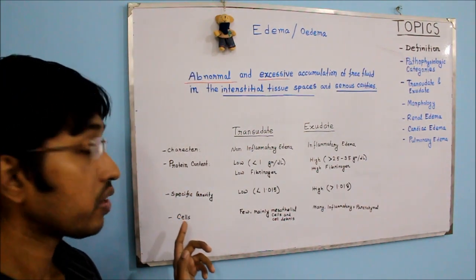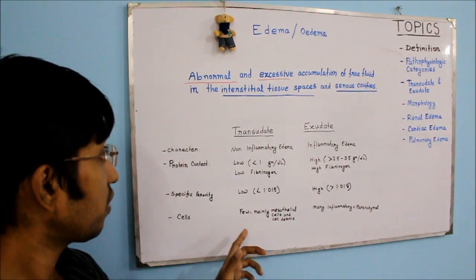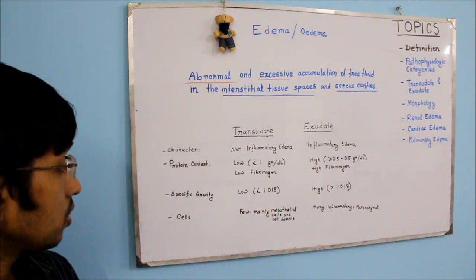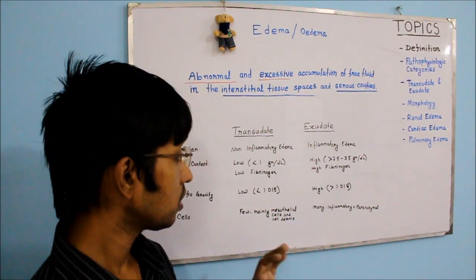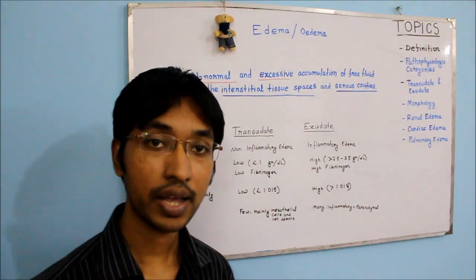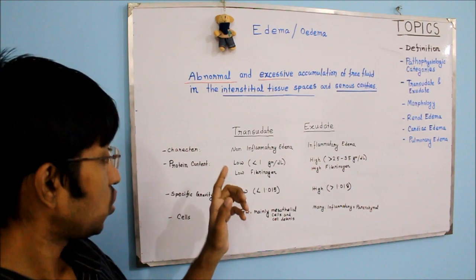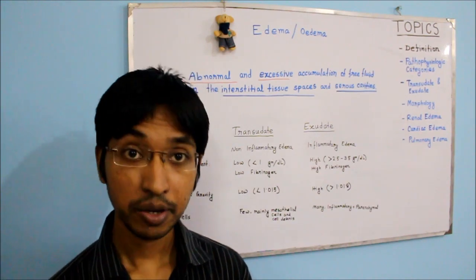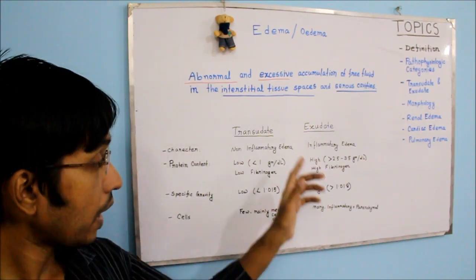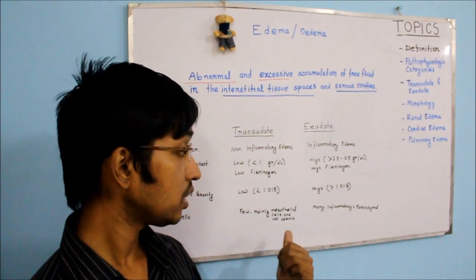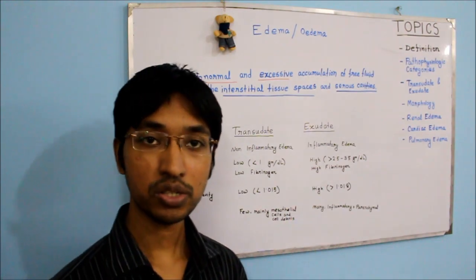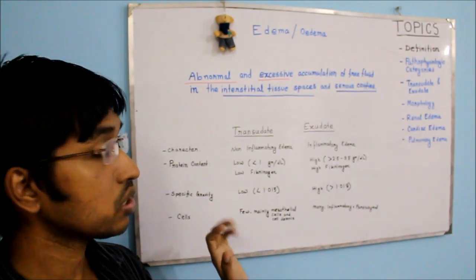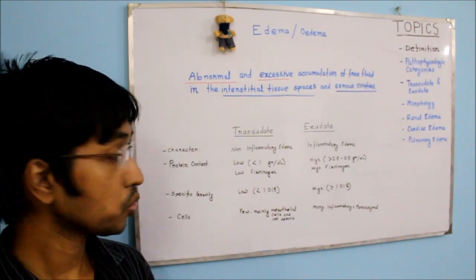Regarding specific gravity, transudate has a low specific gravity of less than 1.015, while exudate has a higher specific gravity of more than 1.018. Transudate contains very few cells, mainly mesothelial cells and some cell debris, whereas exudate is rich in cells, including both inflammatory cells and parenchymal cells.